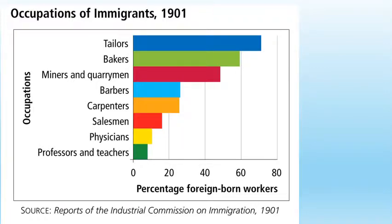What kind of jobs did most immigrants have? Most ended up in the clothing trades — a lot of tailors and people working on sewing and clothing. Bakers formed a large group. Miners, quarrymen, barbers, carpenters, salesmen, and physicians also appear, though very few migrants broke into the professional world. It was much harder for migrants to break into professional careers.